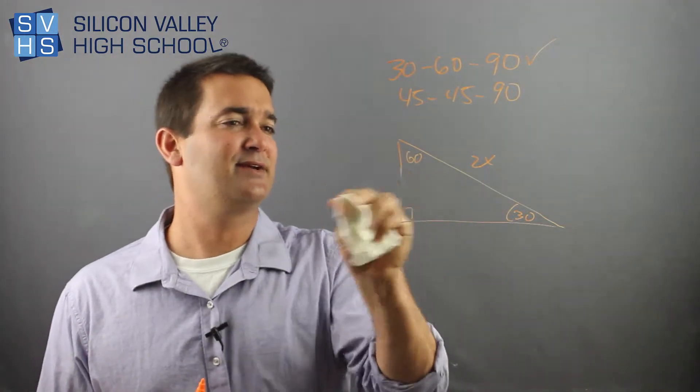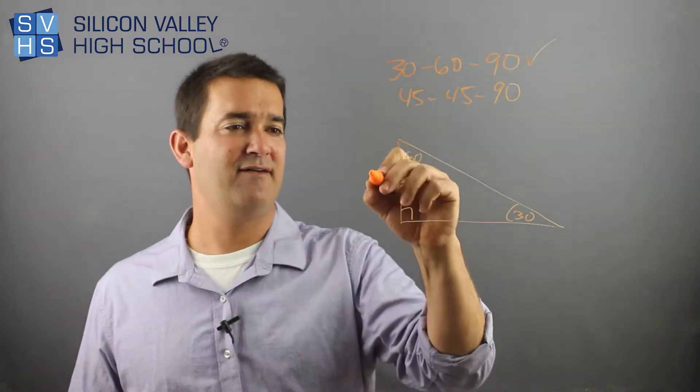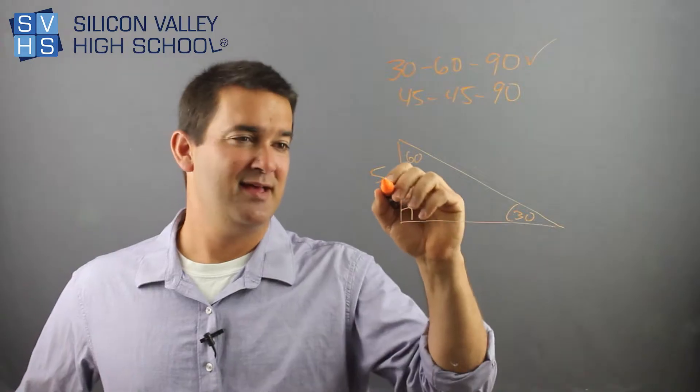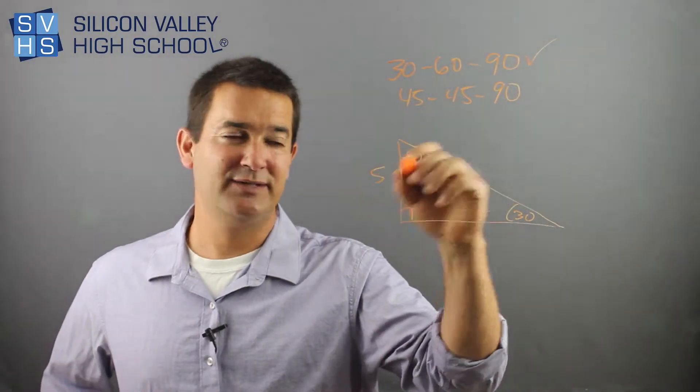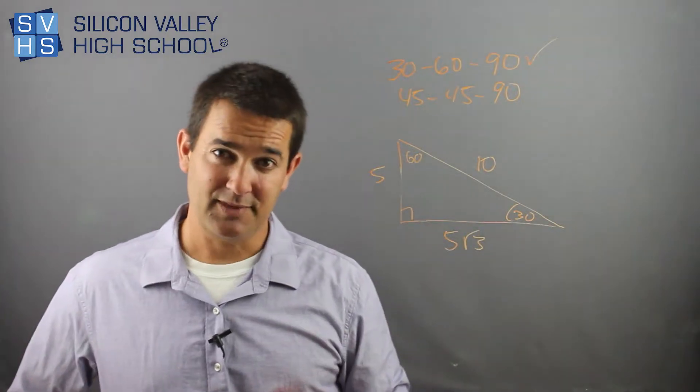So they might do something like this. This is a 30-60-90, and they'll say this is 5, so find the other sides. Remember, it's x, 2x, and x root 3. If this is x, and this is 2x, you literally just double it, and then this is just times root 3. Done.